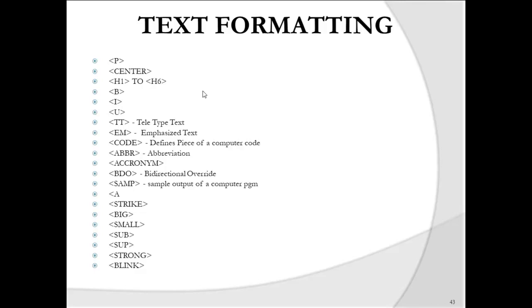Text formatting can be done with many tags: P, center, H1 to H6, B, I, U, teletype text, emphasized text, code (defines a piece of computer code), abbreviations, acronyms, bidirectional override, sample output, strikethrough, big text, small text, strong, links, subscript, and superscript. These are the text formatting tags available in HTML.